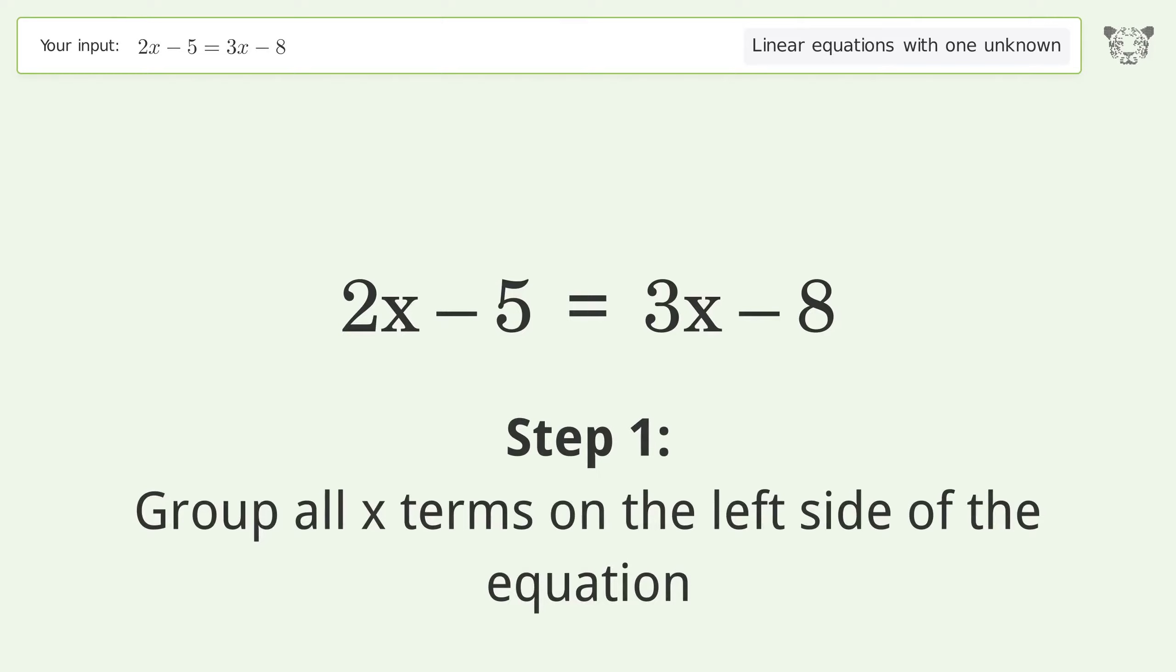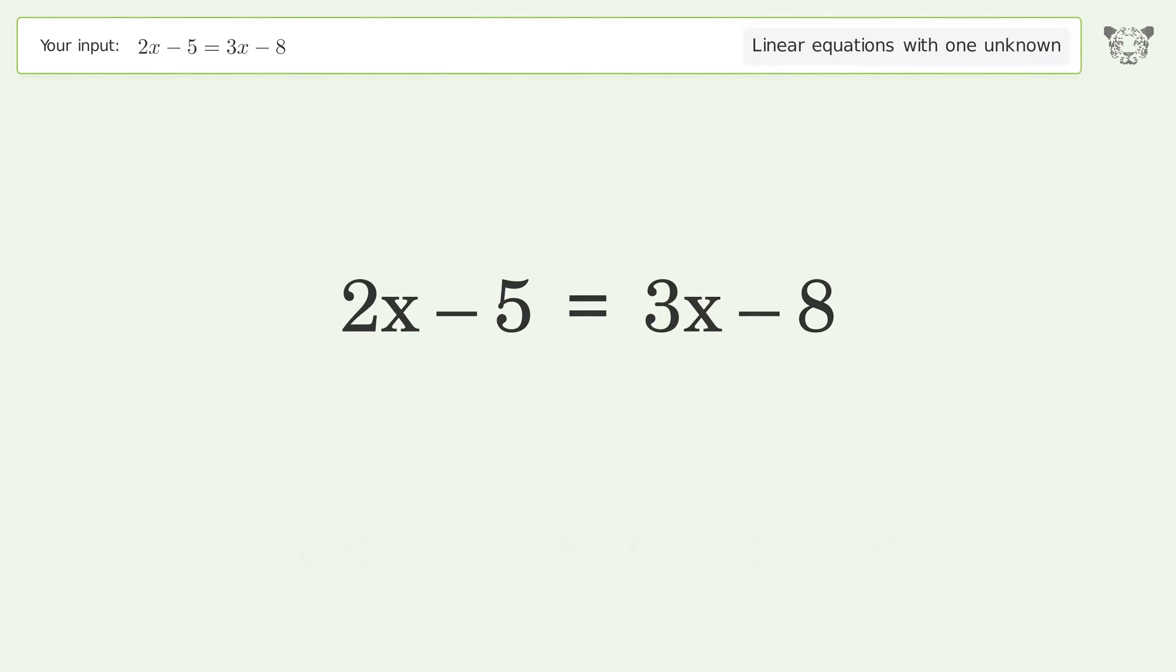Group all x terms on the left side of the equation. Subtract 3x from both sides. Group like terms. Simplify the arithmetic.